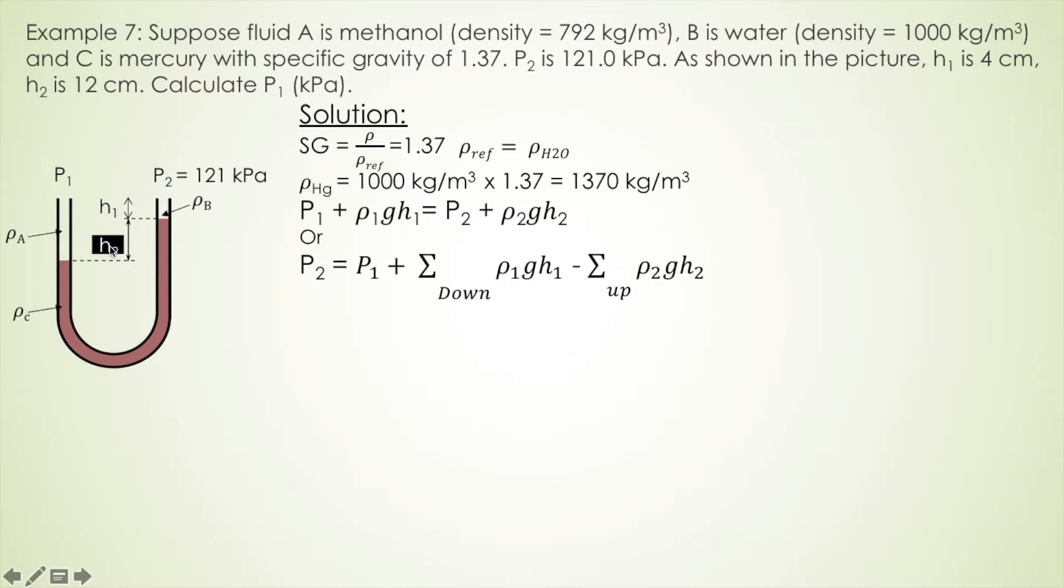If the liquid go up from final comparing to the initial, then we use minus sign. So if it goes down, let's say it start from here, and then the final is here, right? So we use plus sign.